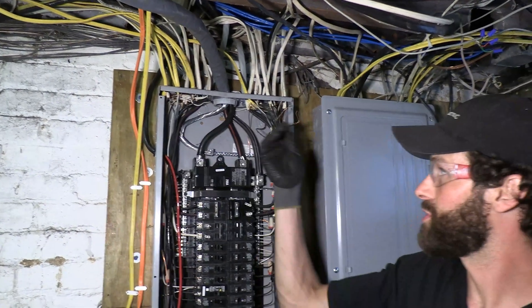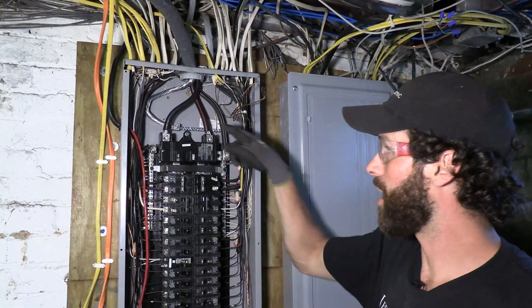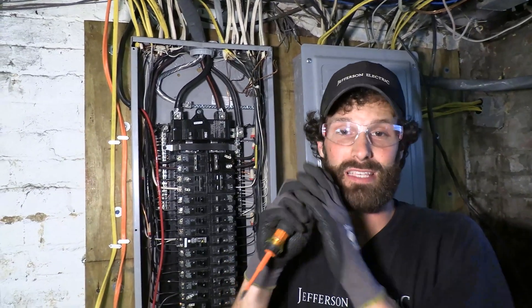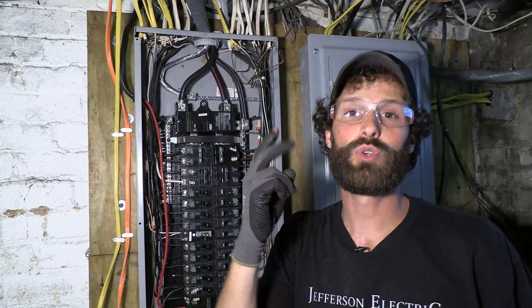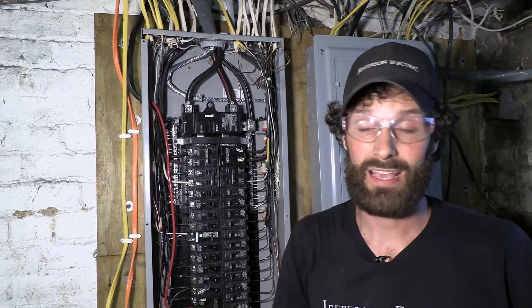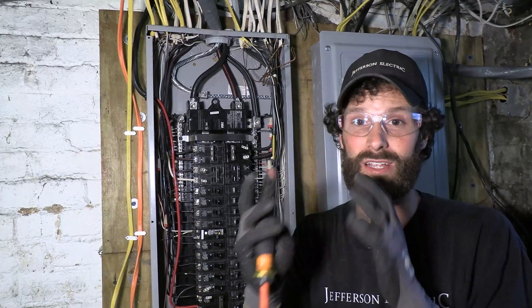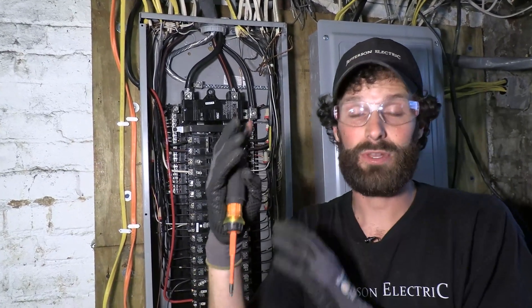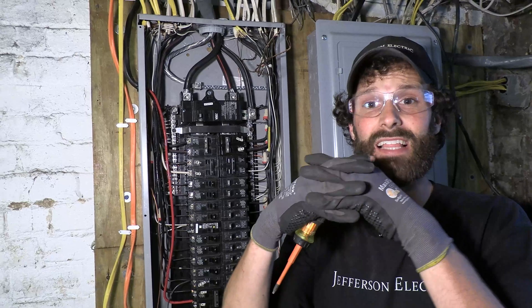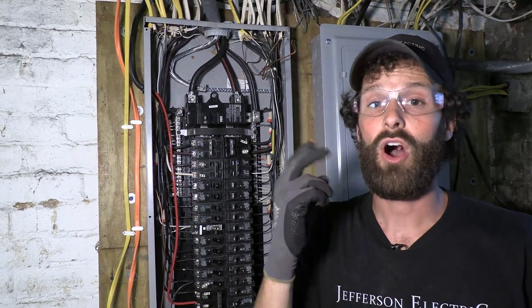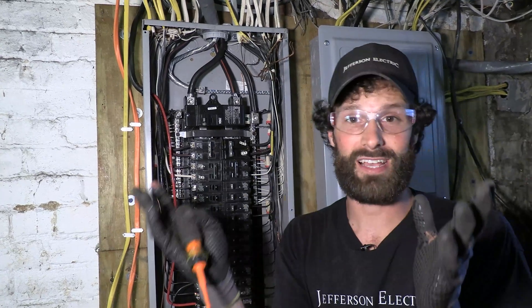The only time you can put two grounding conductors on one terminal screw is when the terminal screw is explicitly rated for two or more conductors of that size. If you are putting two conductors, never put two dissimilar conductors together, i.e. aluminum and copper. That dielectric union will cause corrosion potentially overheating.